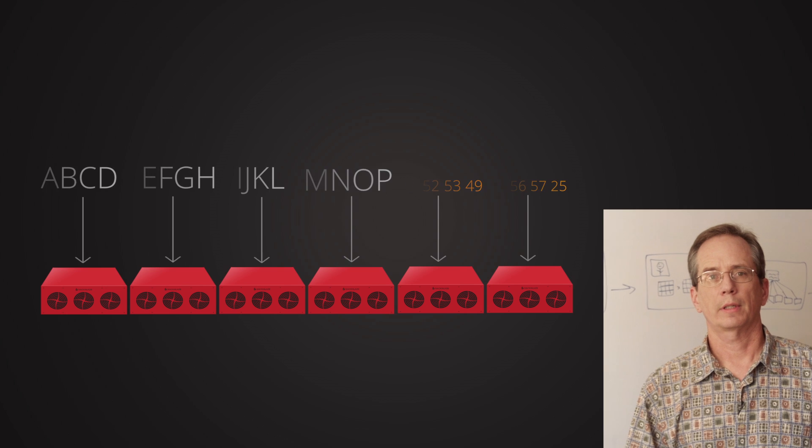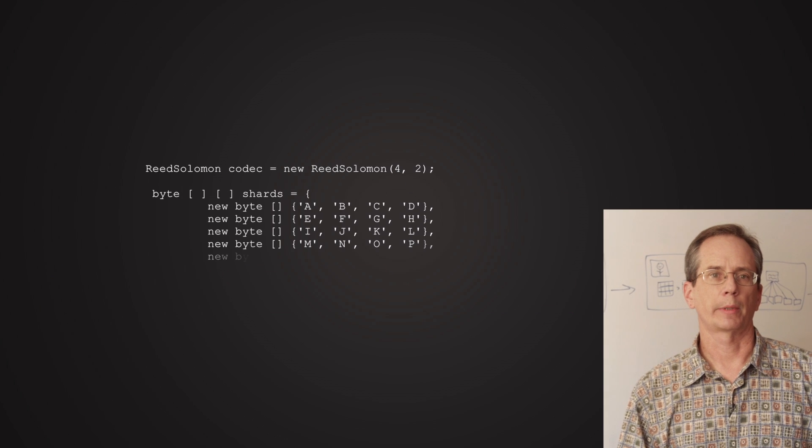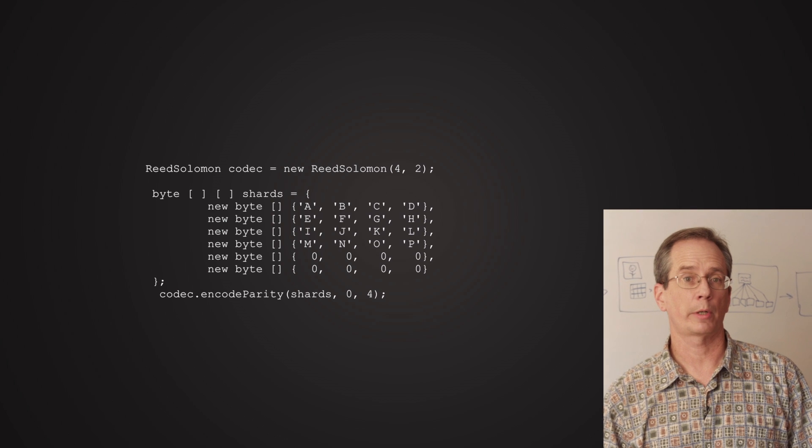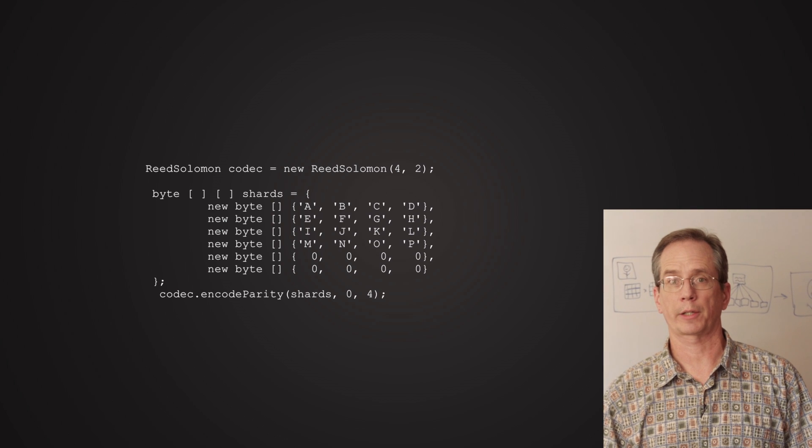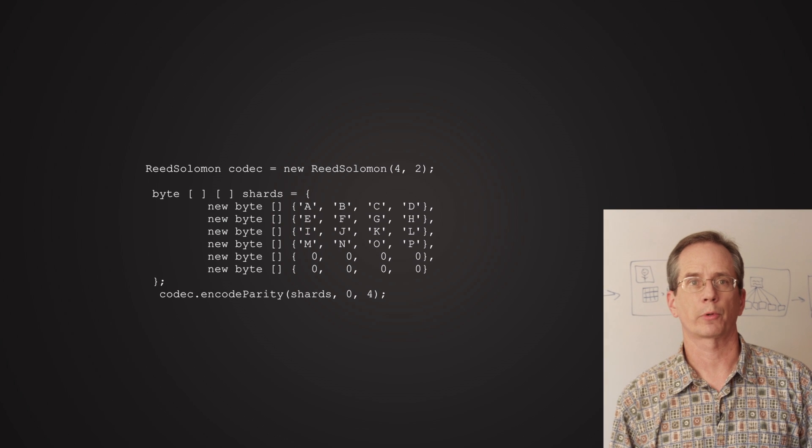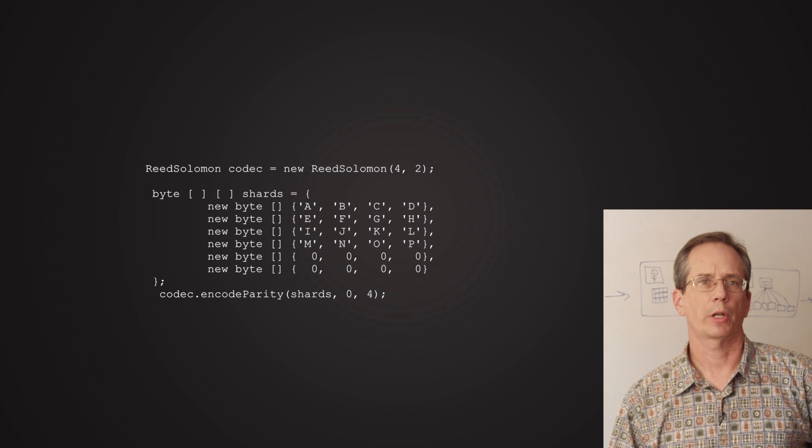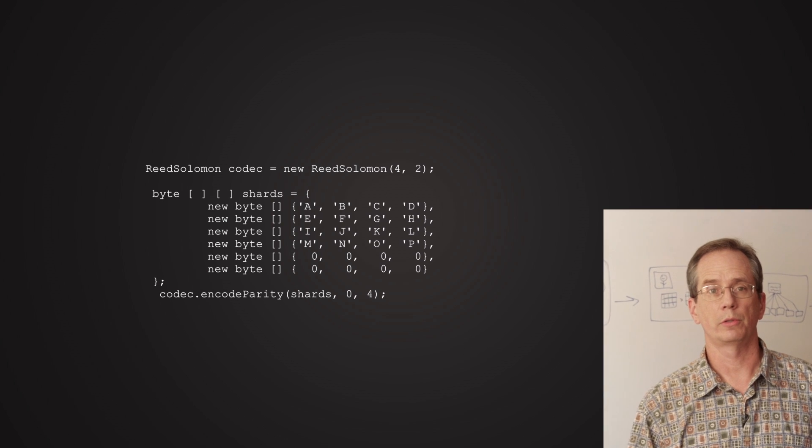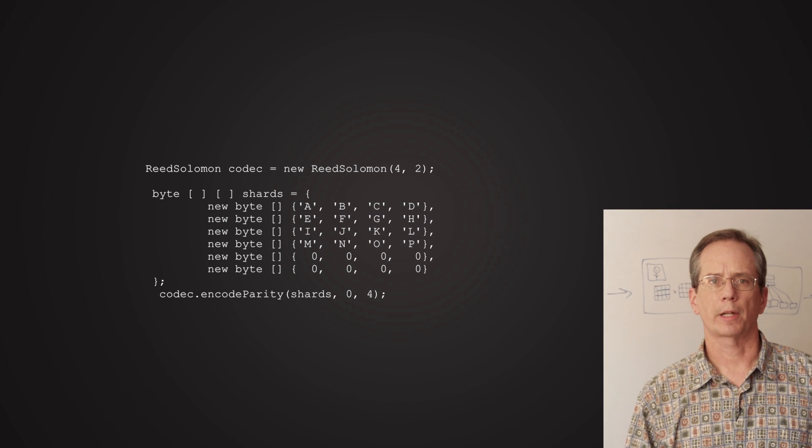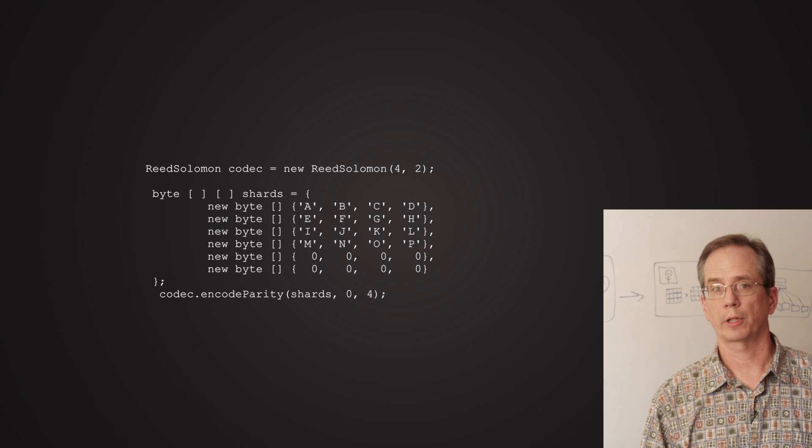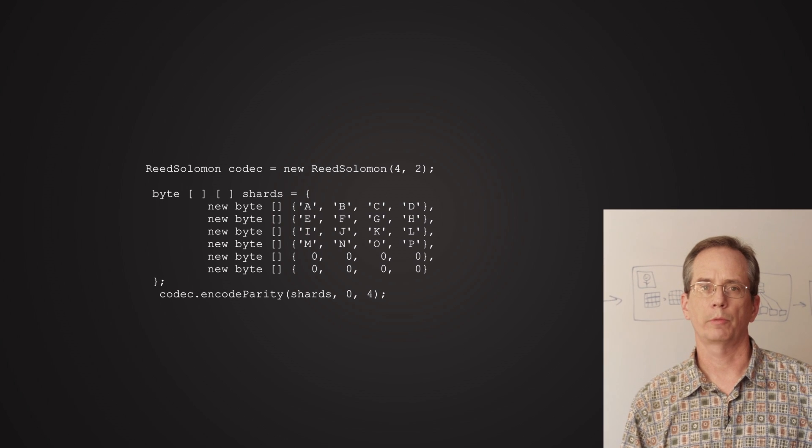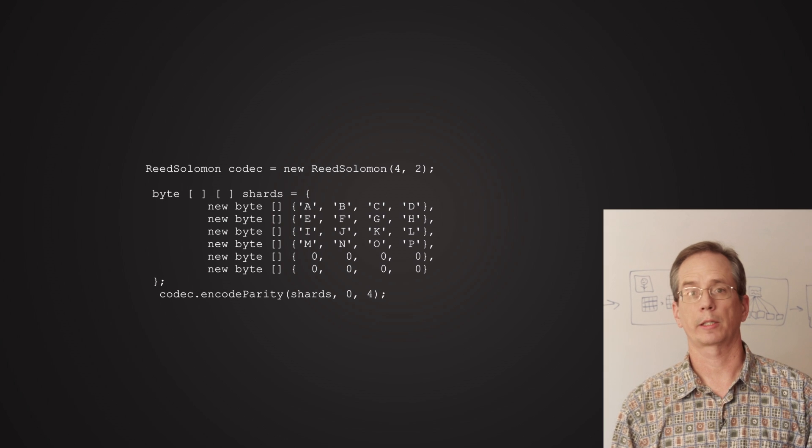Now we have released open source, a Reed-Solomon erasure coding library, that you can use in your own projects to do your own coding. This is the same library we use in the Backblaze Vault architecture. It's high performance and scales for massive amounts of storage. This example code shows how you can use it to create the parity for the example we had in those slides. You create a Reed-Solomon codec with four data shards and two parity shards, create some byte arrays with your data in it, and then call the encode method, which will take the original data and compute the parity.